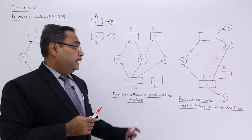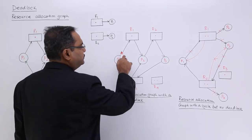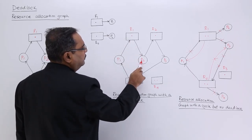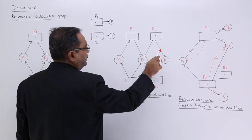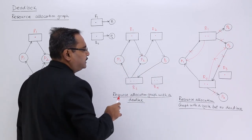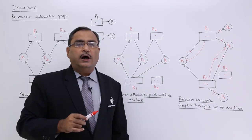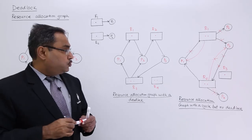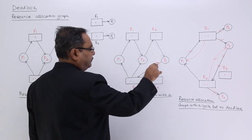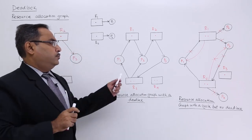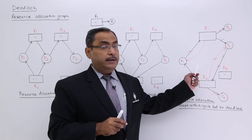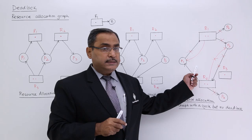In this second example you cannot resolve the situation. Every process is waiting: one is waiting for R1, another for R2, another for R3. Each and every process is waiting for another process to complete. There is a cycle and deadlock is present. So comparing both: in the first graph there was a cycle but no deadlock, in the second graph there is a cycle and deadlock is present.